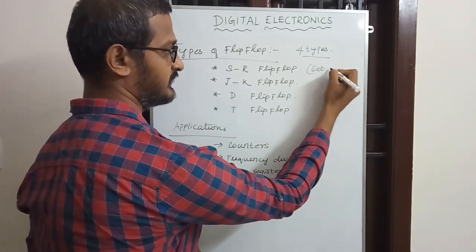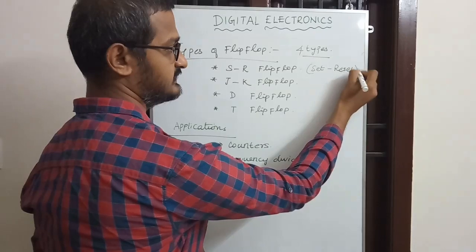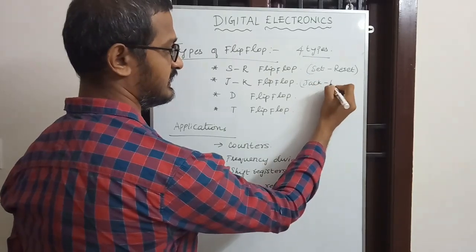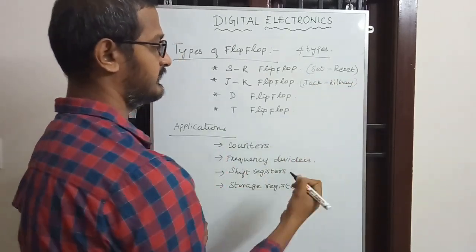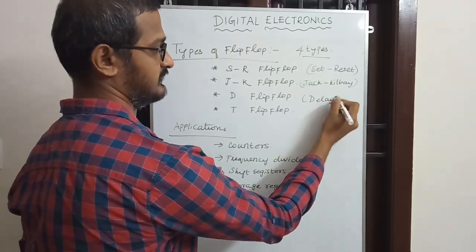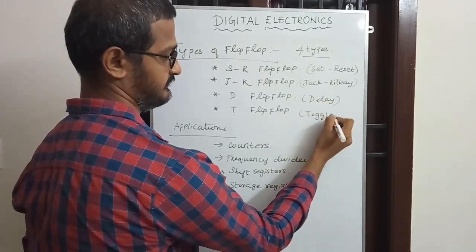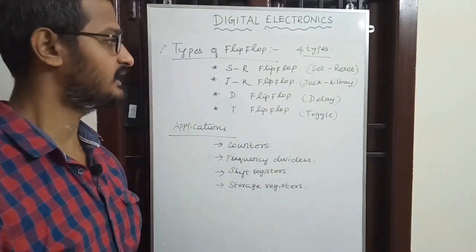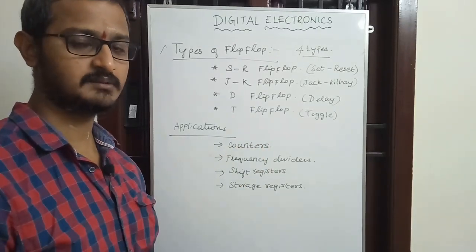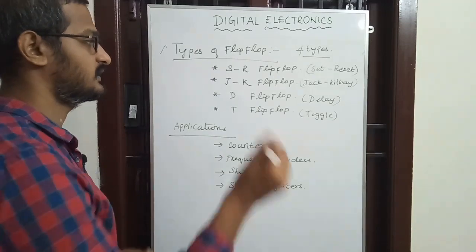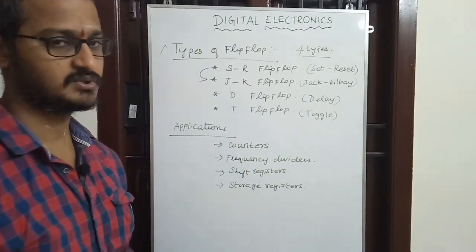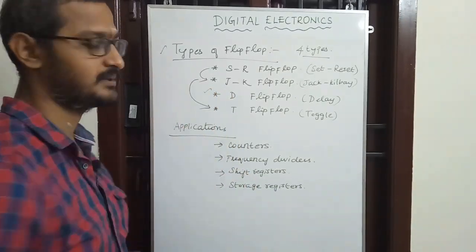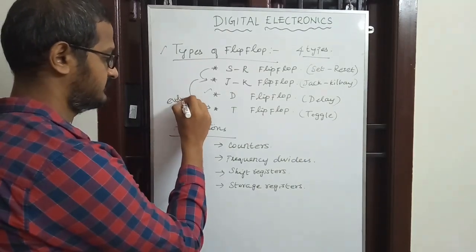S stands for Set and R stands for Reset — so SR is the Set-Reset flip-flop. JK stands for Jack and Kill. D stands for Delay and T stands for Toggle. The JK flip-flop is derived from the SR flip-flop, and the T flip-flop is evolved from the JK flip-flop, so they are interdependent.